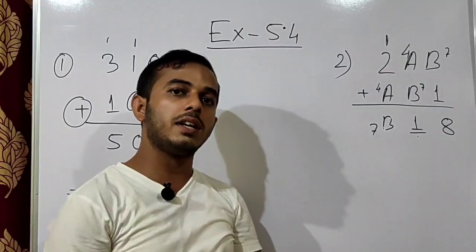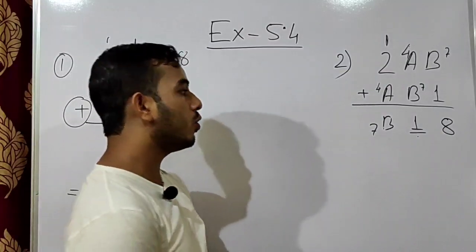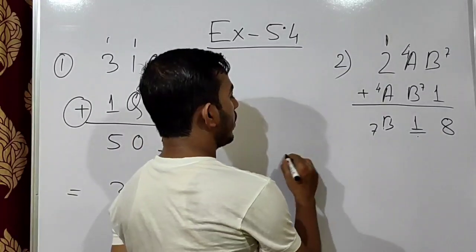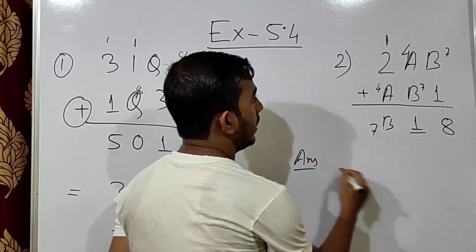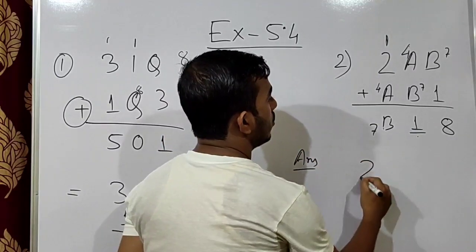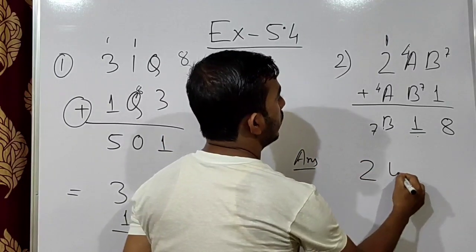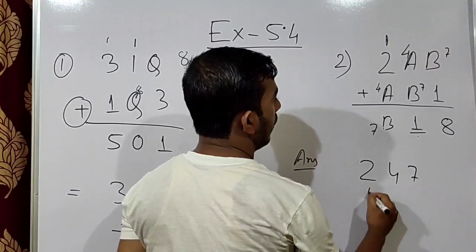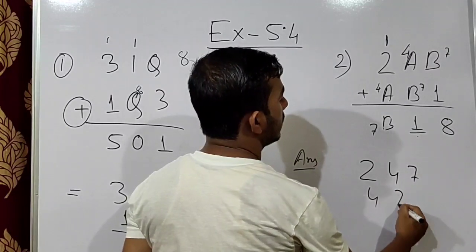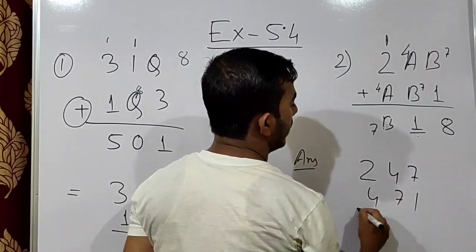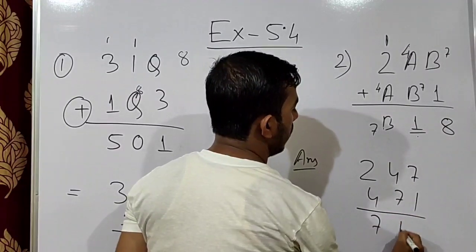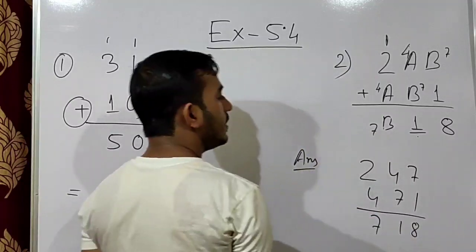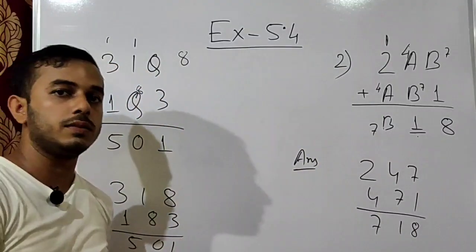Value of A is correct as well as value of B is correct. So we write the answer: 247 plus 471 equals 718. This is our required answer.